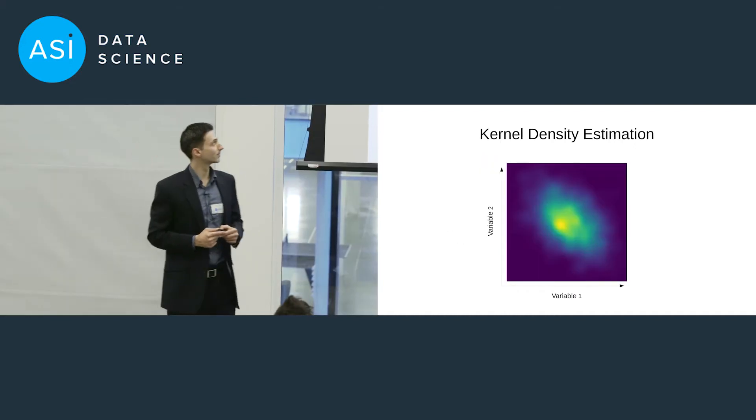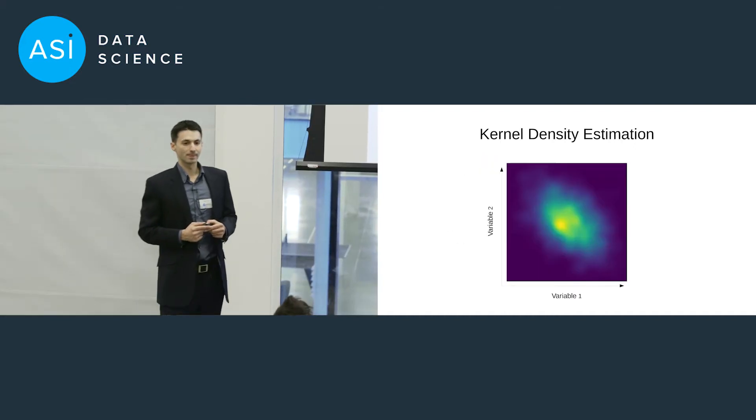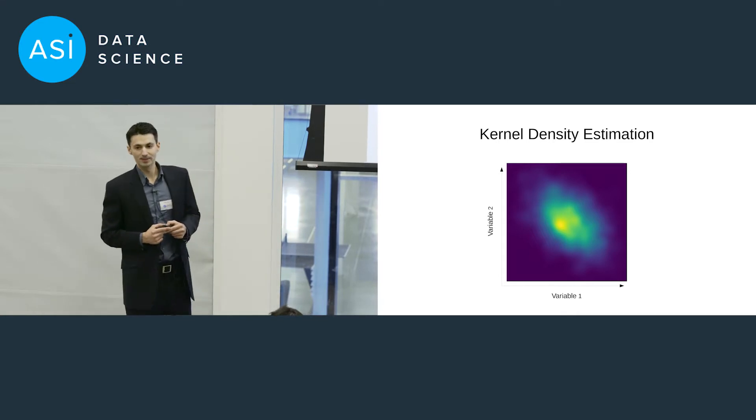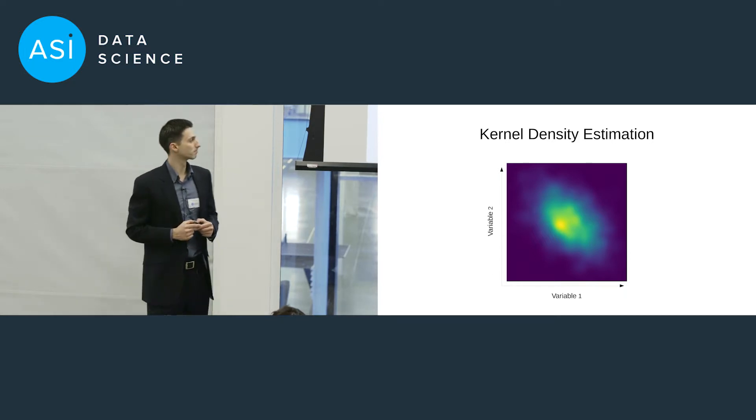Now, the background to this is something called kernel density estimation. In a nutshell, kernel density estimation is a technique which allows us to estimate the distribution of our data. So for example, when we're comparing two columns in lens, we can visualize that using an image. So this allows us to identify where the data are concentrated.